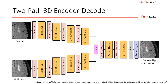Here you see our previous approach for the problem, where we use a U-Net-like 3D CNN with two encoder paths. Each path receives the volume for independent processing. At the decoder, we fuse both volumes and decode the joint representation into a prediction of lesion activity.